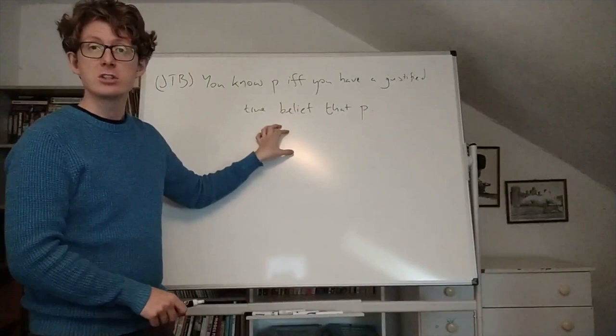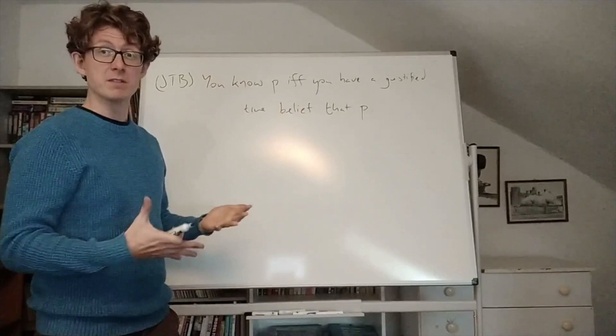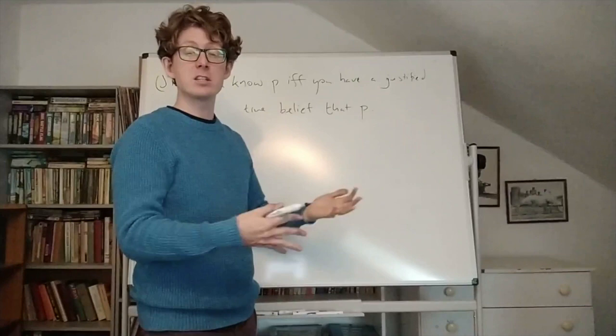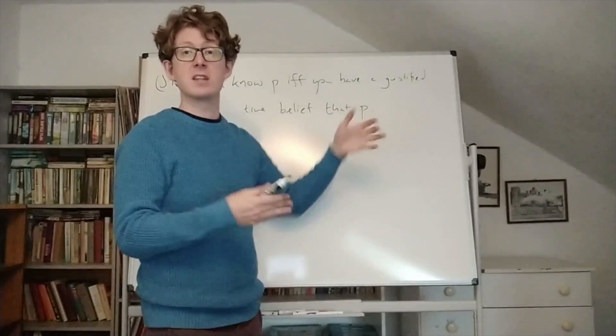Now we already motivated each of these as a necessary condition on knowledge. We saw that it looks like you need to believe something in order to know it. It looks like it needs to be true in order for you to know it. And we saw that we want to be able to distinguish merely accidentally true beliefs from genuine knowledge. And the idea that justification has something to do with it is an appealing thought.